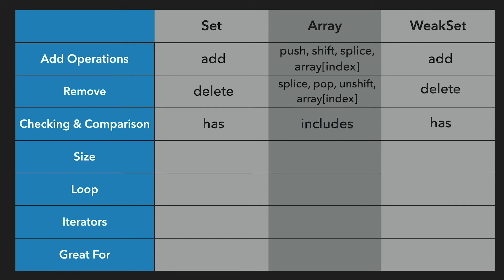The has method lets you check if items exist in Set and WeakSet, but arrays have includes and also other methods like every and some that let you check multiple items at once. You get the size with the size property in Sets and length in arrays, but WeakSet does not allow for this kind of information. Same for looping — WeakSet is left out, and forEach is an option for both Sets and arrays, but arrays have more powerful iteration methods that allow you to modify and return totally new arrays, like map and filter.